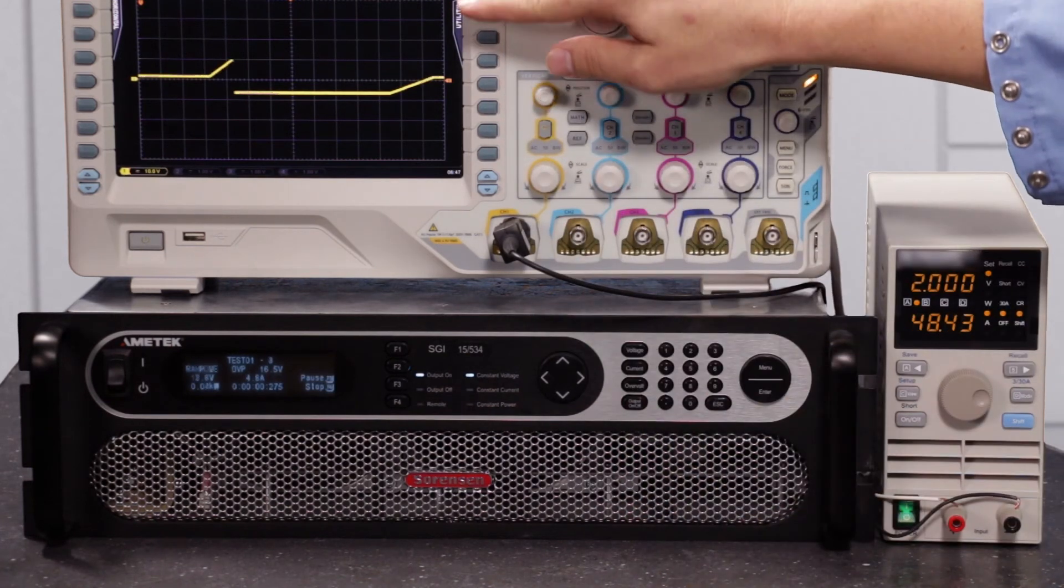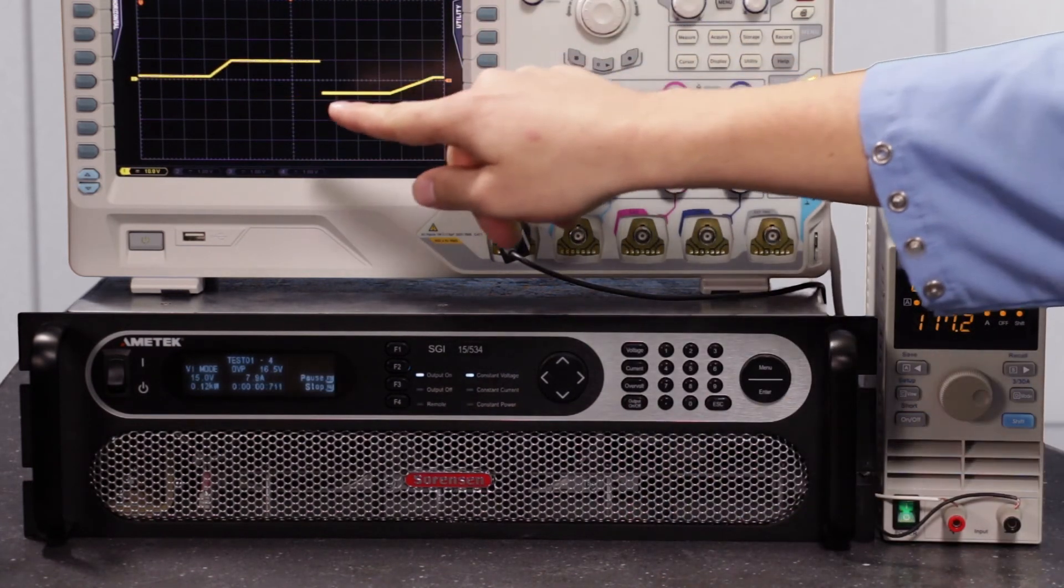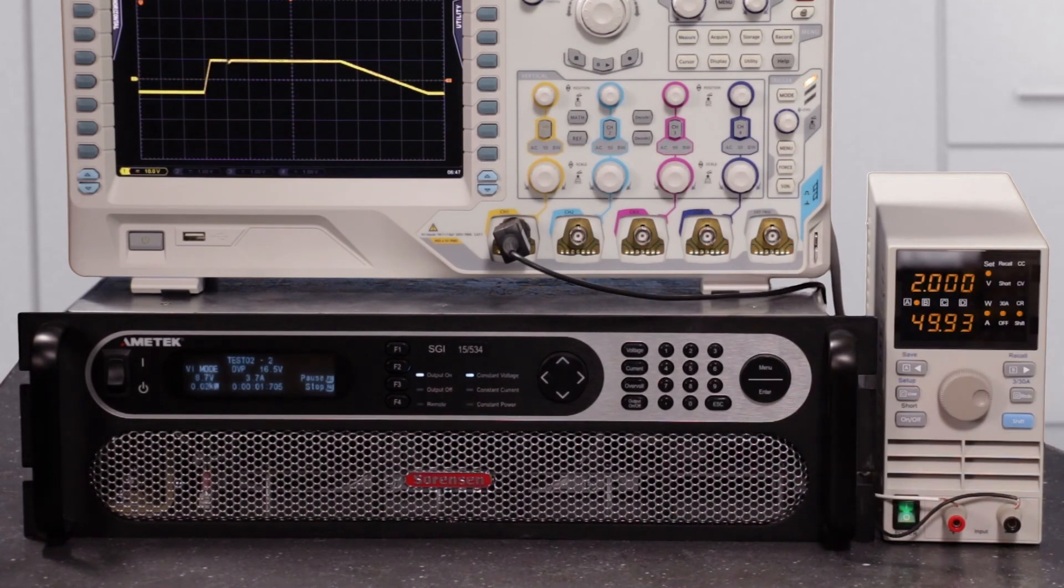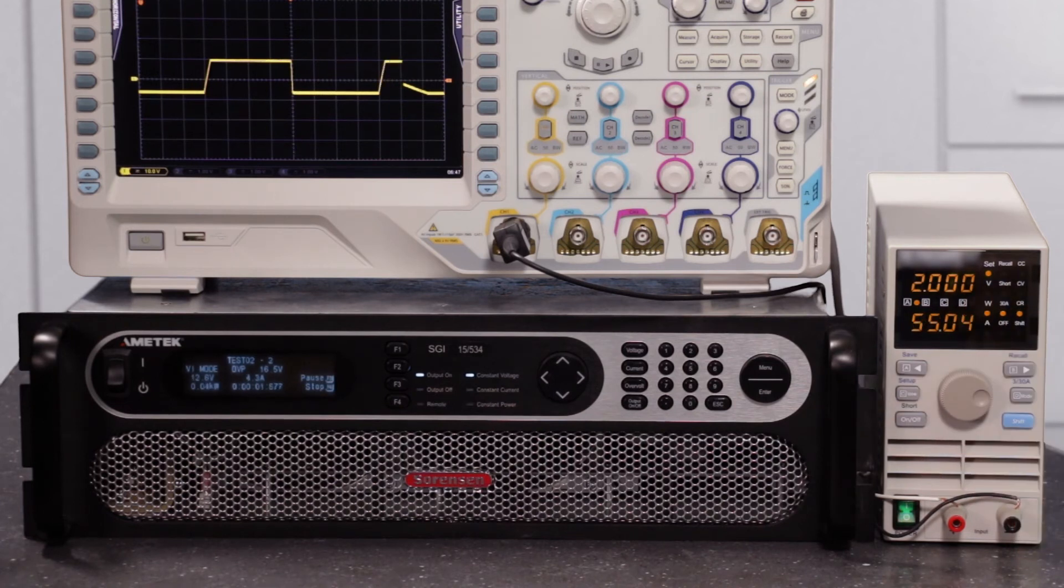You can see here on the oscilloscope that it's ramped to seven and a half volts and then to 15 volts. I've got it set to a really wide display so that you can see it all happen over time. And now it's on to the zero to 15 volt cycles. It'll go through a few of those.